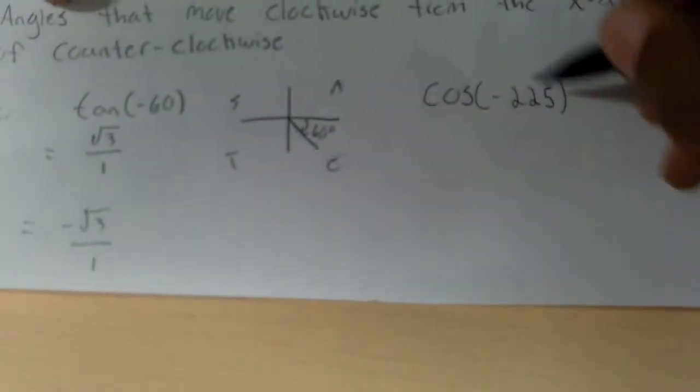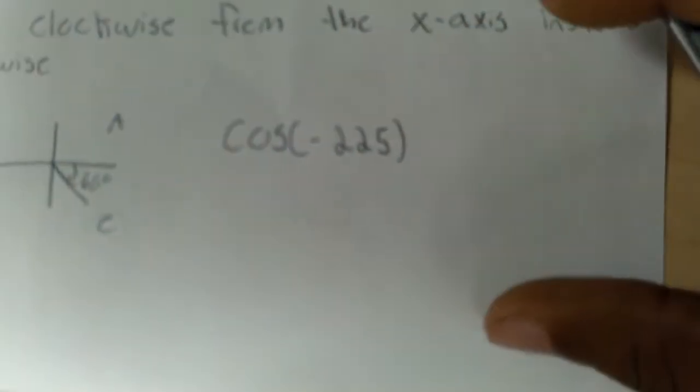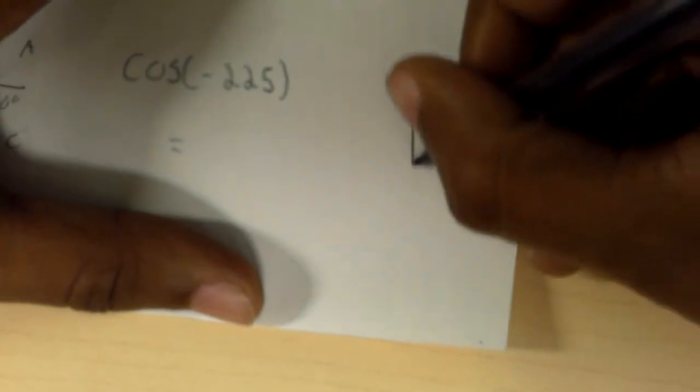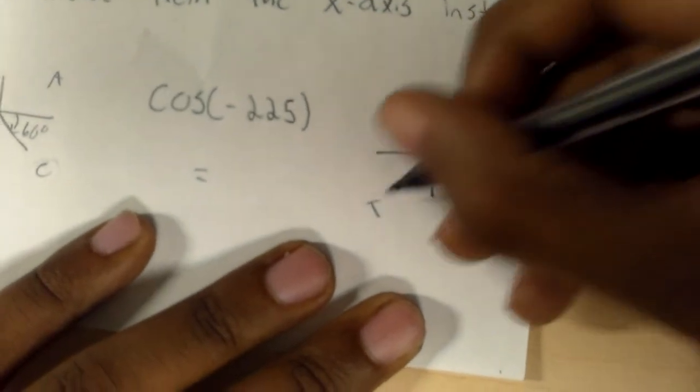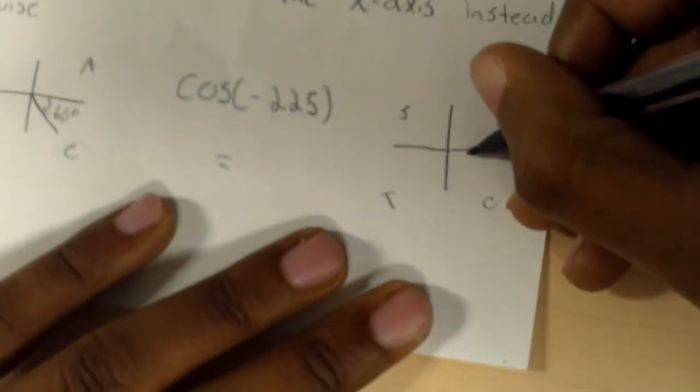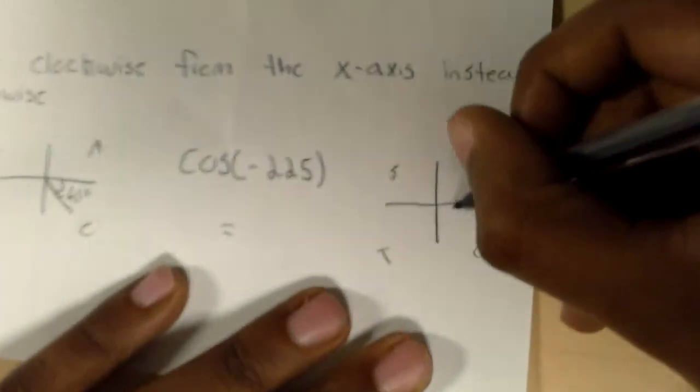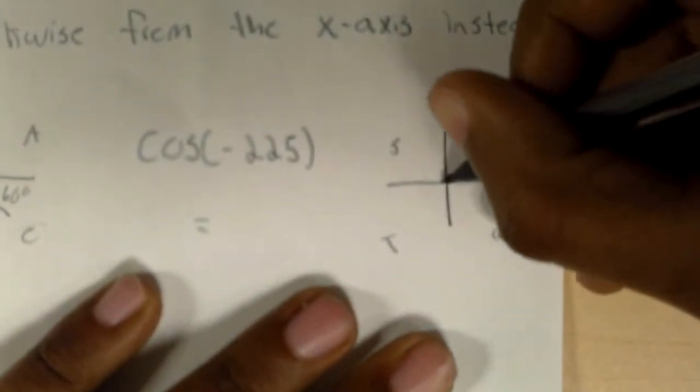And then if you're solving for the cos of negative 225, you first draw your diagram again. And it goes negative 225, so it would be 90, it would be here.